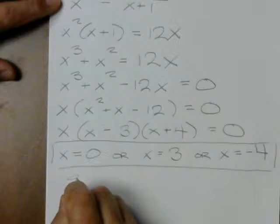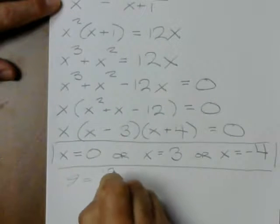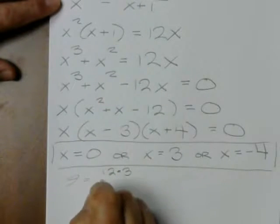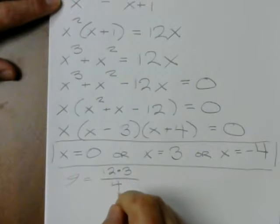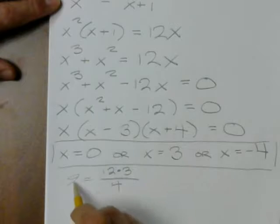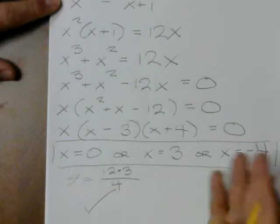I get 9 equals 12 times 3 over 4. Well, 12 over 4 is 3, so 9 is equal to 3 times 3? Sure.